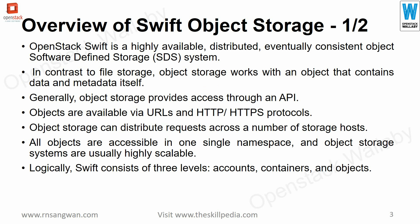OpenStack SWIFT is a highly available, distributed, eventually consistent object storage Software Defined Storage (SDS) system. In contrast to file storage, object storage works with objects that contain data and metadata — like virtual machines, directories, files, zip files, or anything else such as movies and images. Generally, object storage provides access through an API.